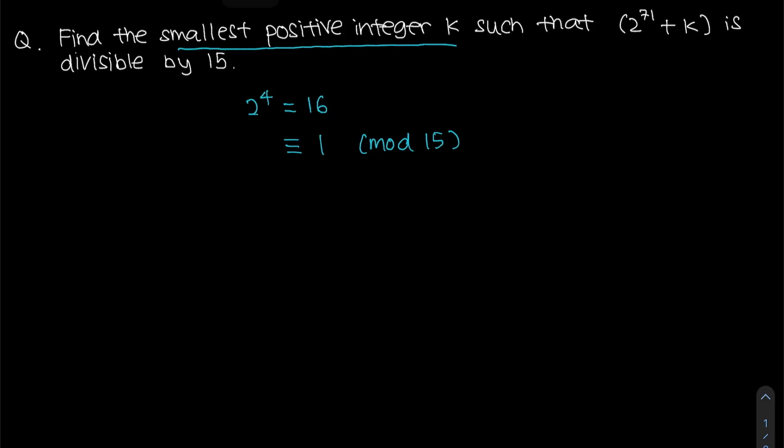So now notice that you have 2 to the power of 71. Let's break that down into how many 2 to the power of 4s do we have. All we need to do is take 71 divided by 4. Notice that this will give you 17 and remainder 3.